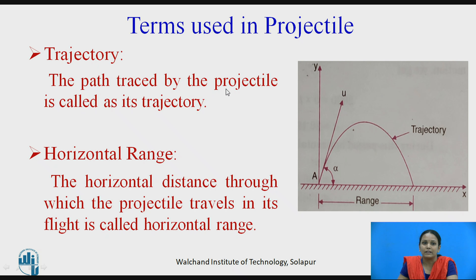Now in this lecture, we are going to study inclined projection on leveled ground. Consider the figure where a particle is thrown with velocity U, inclined in a plane, having two directions: X and Y, meaning horizontal and vertical. Point C is the maximum height the particle reaches before coming back to the ground level, thrown from a leveled ground surface.